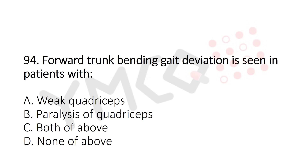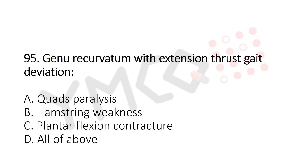Question 93/94: Forward trunk bending gait deviation is seen in patients with — option A: weak core muscles, option B: paralysis of core muscles, option C: both of the above, option D: none of the above. The answer is option C: both of the above.